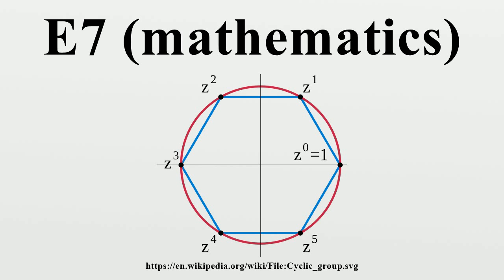The same notation E7 is used for the corresponding root lattice, which has rank 7. The designation E7 comes from the Cartan-Killing classification of the complex simple Lie algebras.